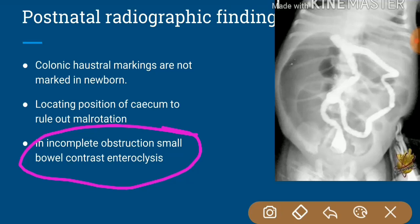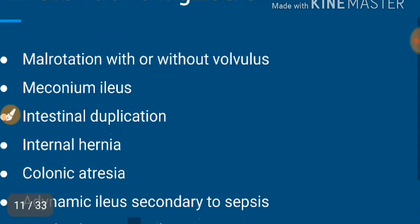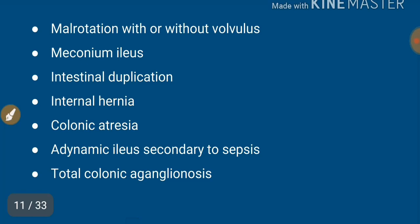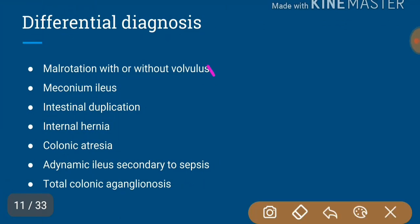Once we know the classical pictures of ileal atresia, we can consider the differential diagnosis. The differential diagnosis of ileal atresia includes: malrotation with volvulus, meconium ileus, intestinal duplication, internal hernia, colonic atresia, adynamic ileus secondary to sepsis, and total colonic aganglionosis. Let us see how these differentials come into play.